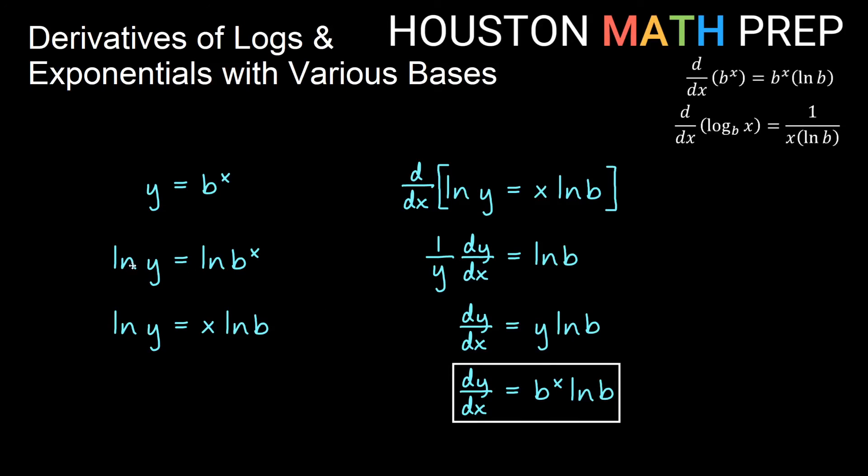This process — taking the log of both sides and then taking the implicit derivative — is called logarithmic differentiation, which we're doing in our next video in the series. It allows us to take derivatives of lots of other things we couldn't normally do. Check out our logarithmic differentiation video. Thanks for watching everybody, we'll see you then.